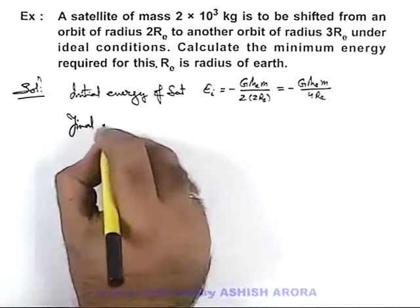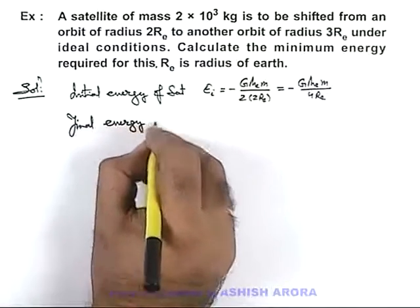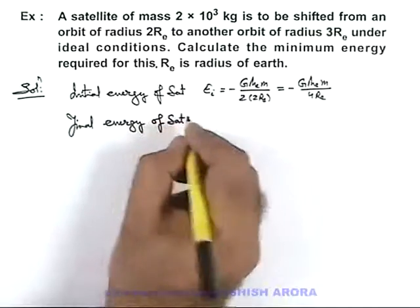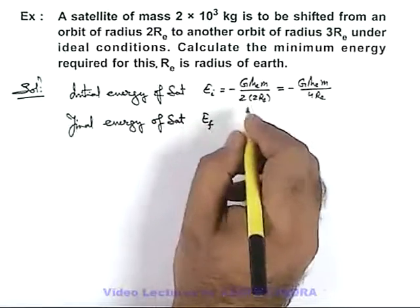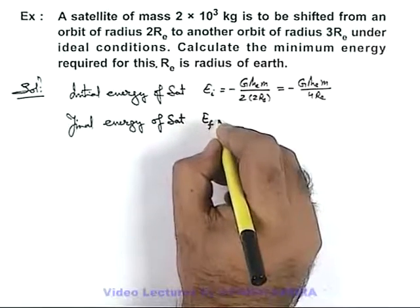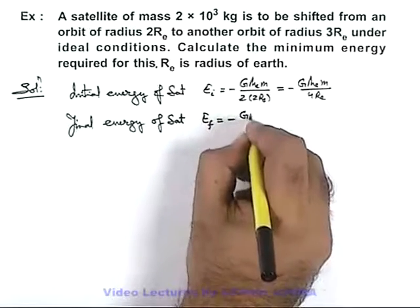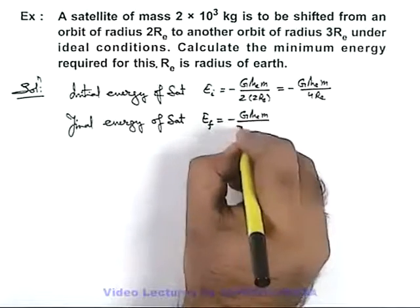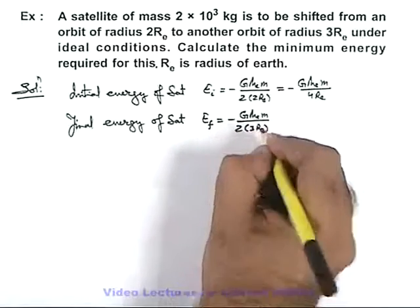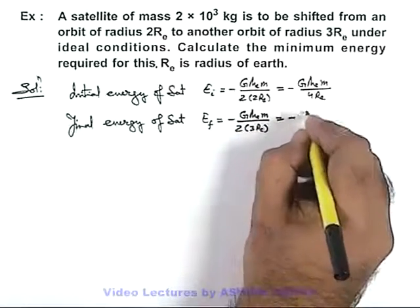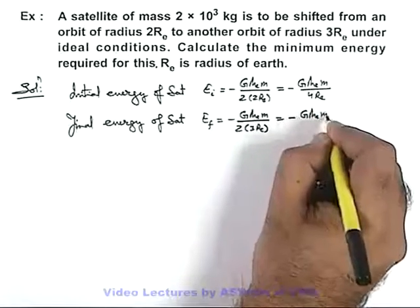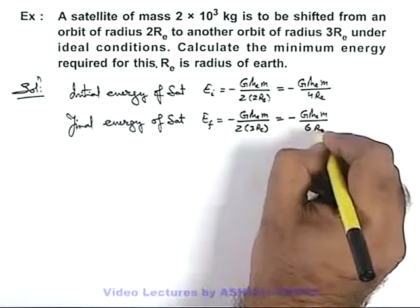And if we find out final energy of satellite after change in orbit radius to 3Rₑ from 2Rₑ, this can be given as minus GMₑm over 6Rₑ.